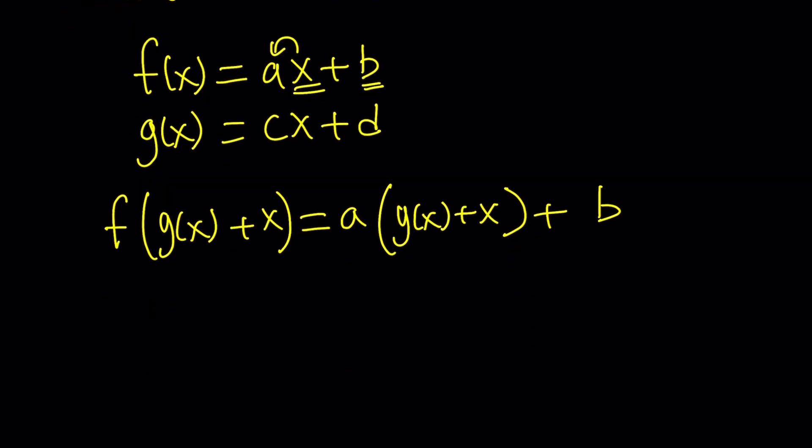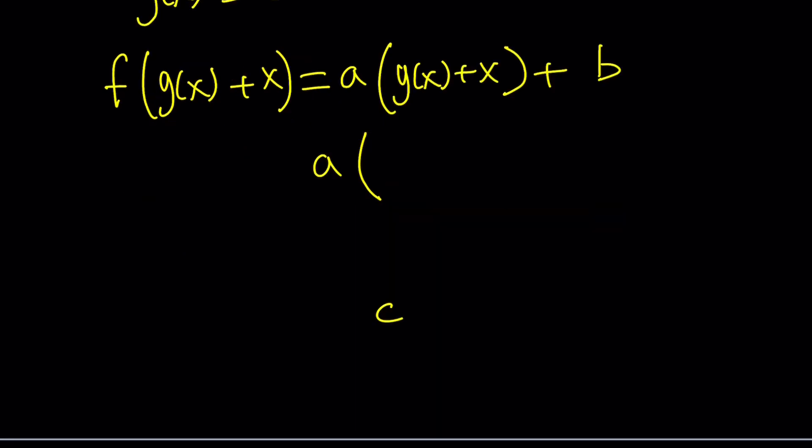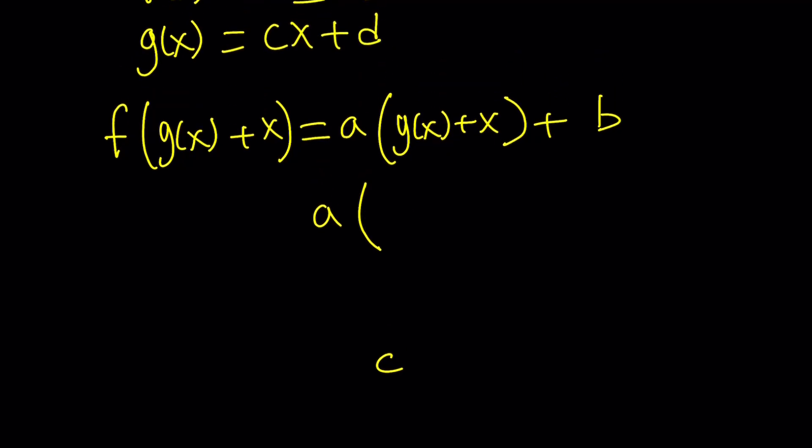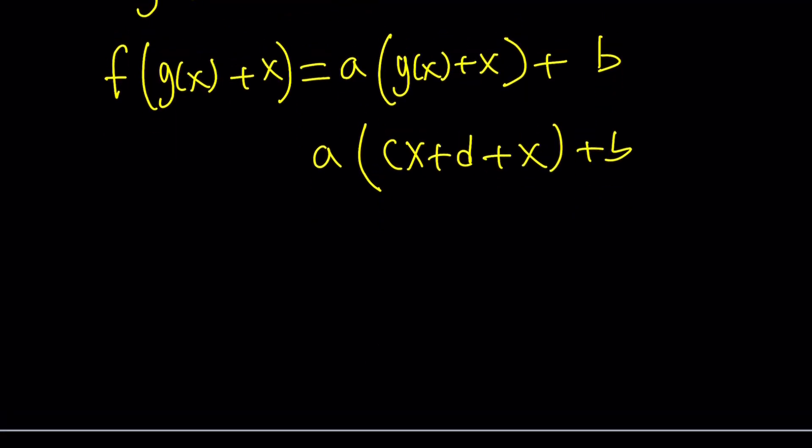But we do know g(x) can be written as cx + d. Now let's replace, since we do know that g(x) can be written as cx + d, let's write it as cx + d, and then another x will come in. And then now, we're going to distribute and simplify, but here we have (c + 1)x.